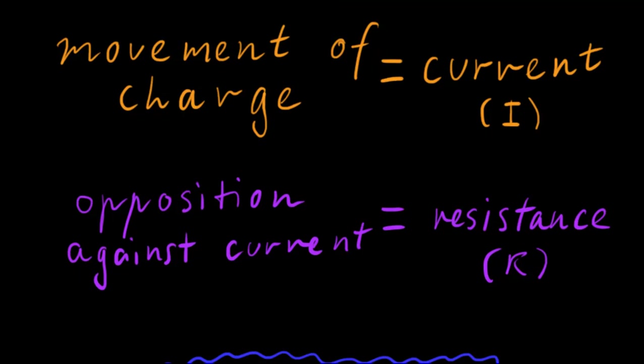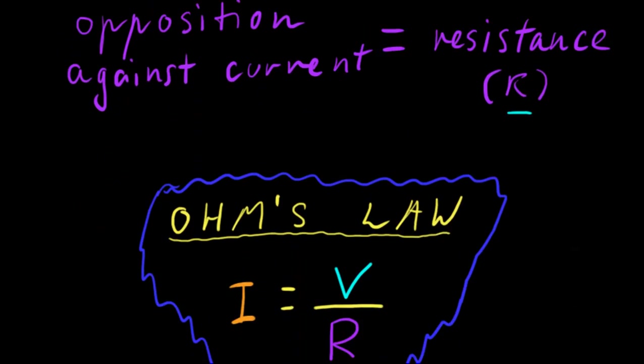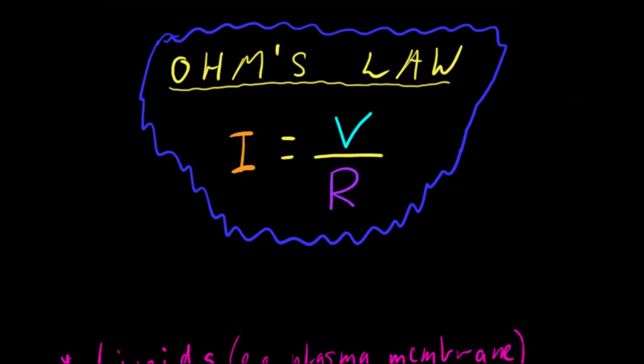Just a few extra definitions. The movement of charge is what we call current, and we can represent that with an I. The opposition against this current is called the resistance, which we can represent with an R. And we can summarize all this in Ohm's Law. Ohm's Law says that the current is equal to the volts divided by the resistance.